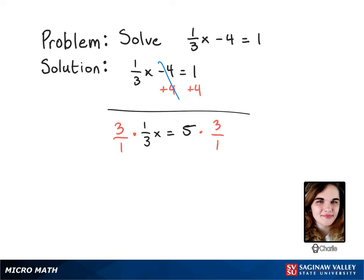Now on the left side, 3 over 1 times 1 over 3 cancels out, so you're just left with x. Now you have x by itself. On the right you have 3 over 1 times 5. Now that 5 is going to multiply into the numerator of the fraction, so you'll get 15 over 1.